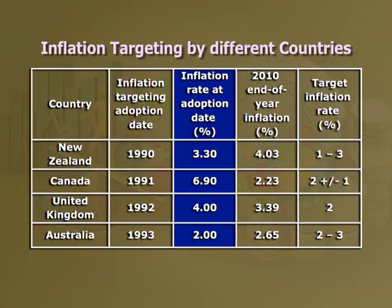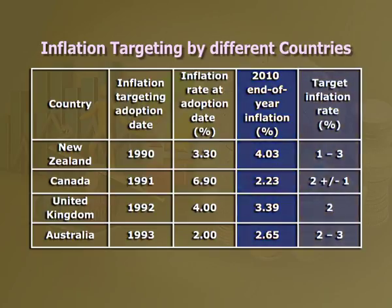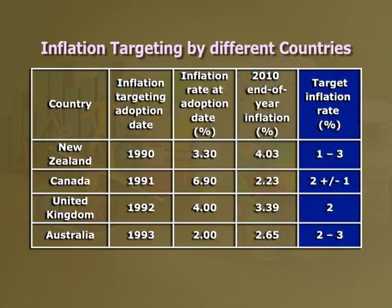Australia in 1993 had an inflation rate of around 2.1%. The 2010 end-of-year inflation figures are: New Zealand 4.03%, Canada 2.23%, United Kingdom 3.33%, and Australia 2.65%. The last column shows the target inflation rate in percentages: New Zealand 1 to 3%, Canada 2% plus or minus 1%, United Kingdom 2%, and Australia between 2 and 3%.